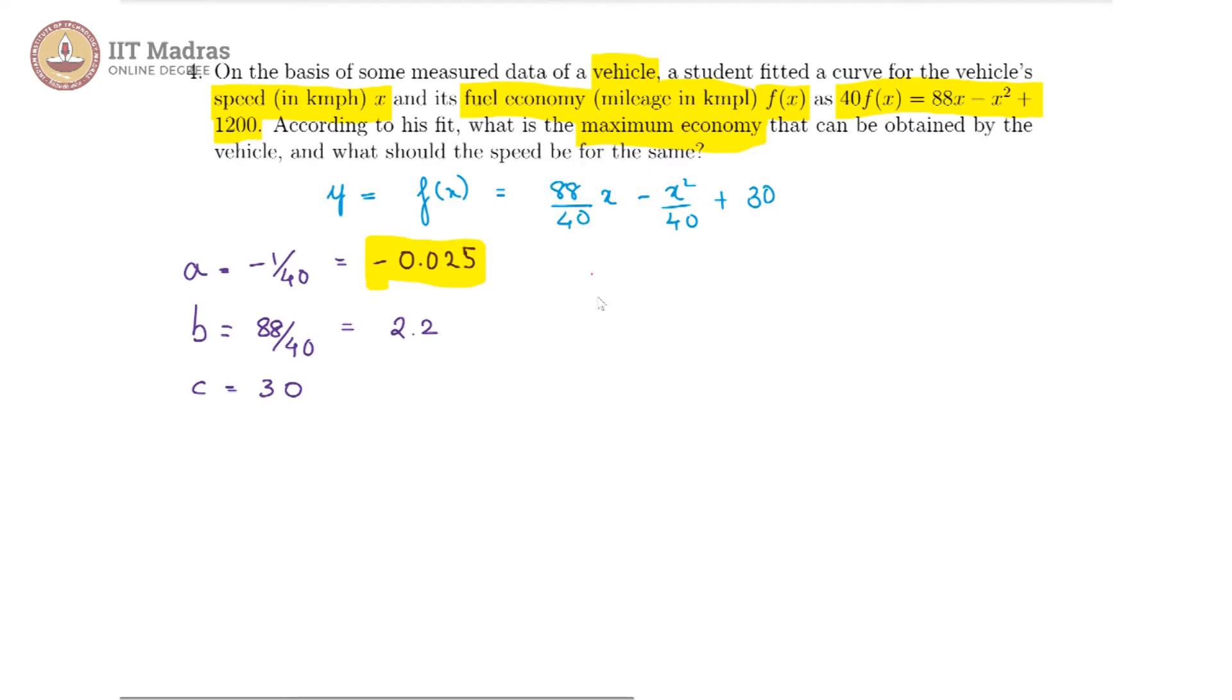And we know that the vertex is at x is equal to minus b by 2a, which in our case is then minus 2.2 by 2 times minus 0.025. This is probably better done in fractions.